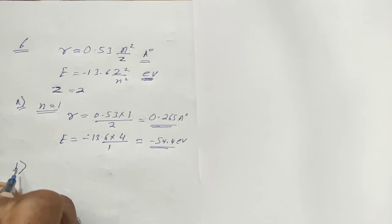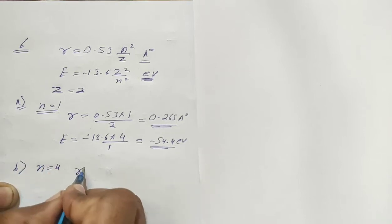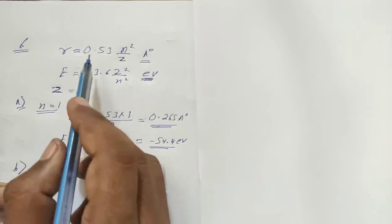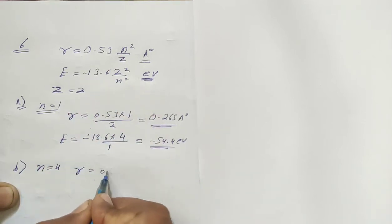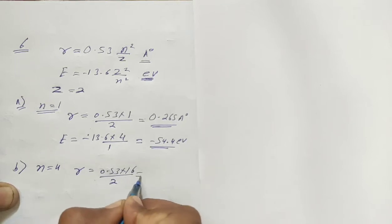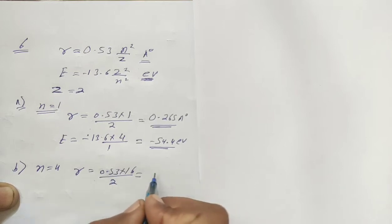Next, in part B, n equals 4. Radius is 0.53 times n squared, that is 16, upon z equals 2. This is 0.53 times 8, which equals 4.24 angstrom.